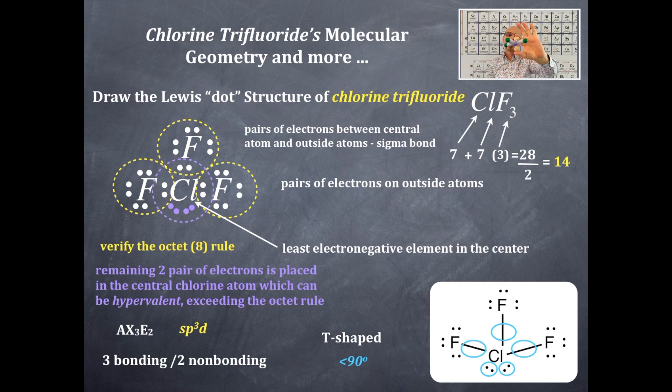Now we're going to ask that polarity nonpolar question. Does this have polar bonds? Is the chlorine and fluorine difference in electronegativity? The answer is yes. Now, the next question is, is this symmetrical or asymmetrical? That is certainly this side is different than this side. This top end is different than this bottom end. That is asymmetrical. Therefore, this is going to be polar.